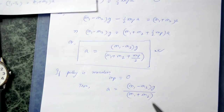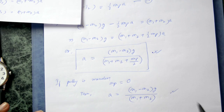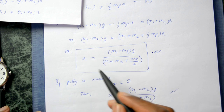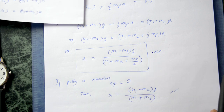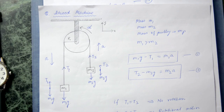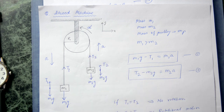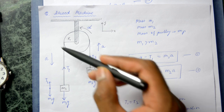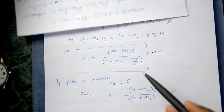As you can see, if the pulley is massless the acceleration is maximum. If the pulley has mass, the acceleration decreases — the more massive the pulley, the lesser the acceleration. This is the standard Atwood machine problem with masses m1 and m2 and a pulley of mass mp, and the acceleration is given by the expression we just derived.